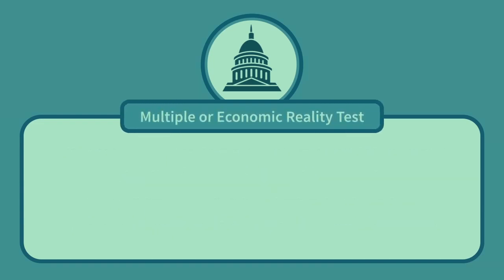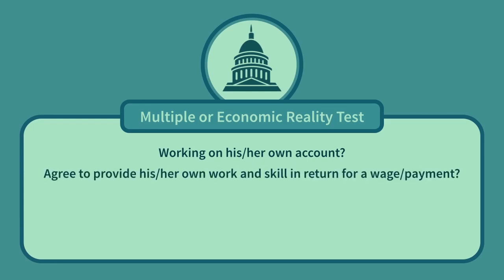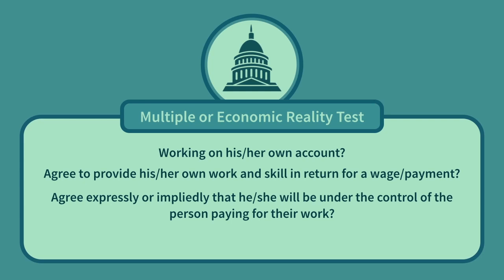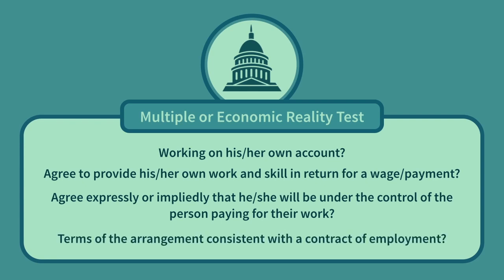The multiple or economic reality test: as no one test has been found to fit all cases and categorically determine the status of a worker, under this test all the facts of the case are considered, including whether the worker was working on their own account, whether the worker agreed to provide their own work and skill in return for a wage or other payment, and whether a worker who can send a substitute to do their work is most unlikely to be an employee. Did the worker agree, expressly or impliedly, to be under the control of the person paying for their work? Are the rest of the terms of the arrangement consistent with a contract of employment? Whilst this test gives flexibility to the courts, it does increase uncertainty as it allows judges to subjectively weigh evidence.